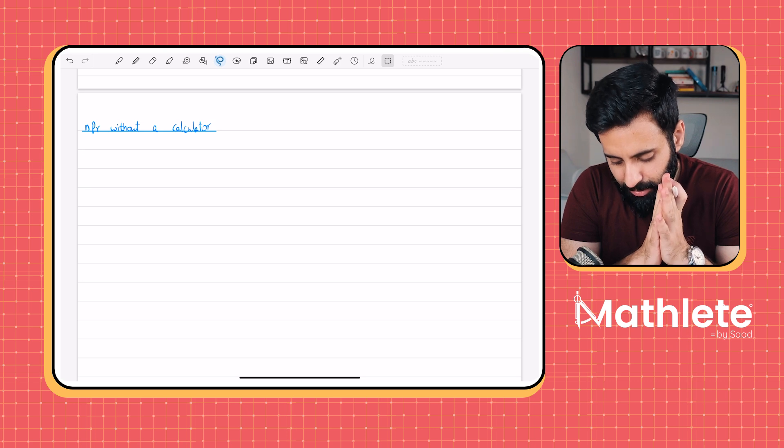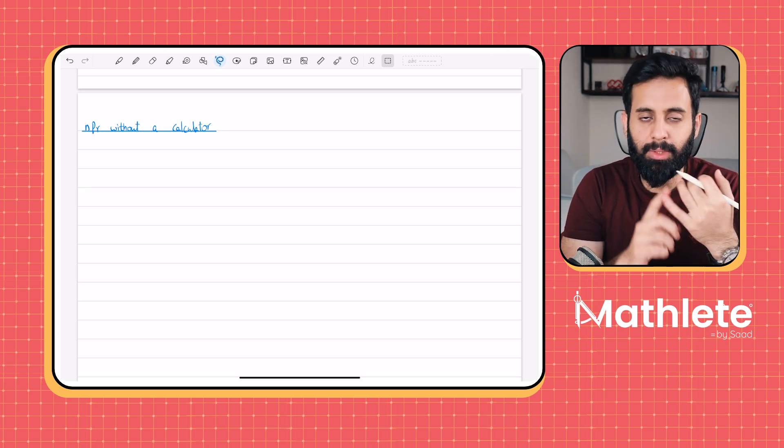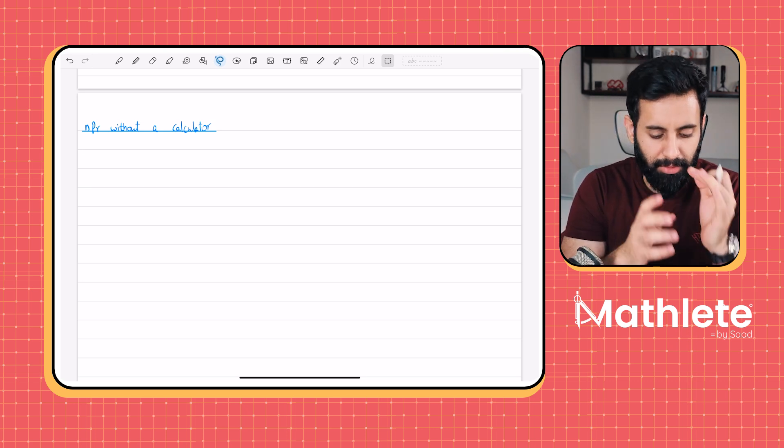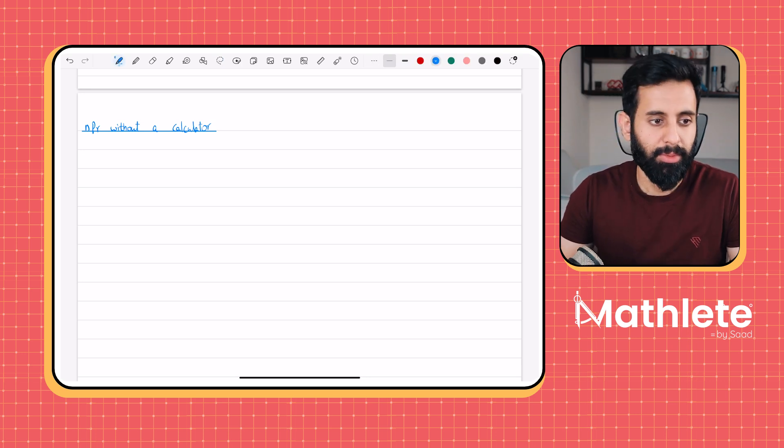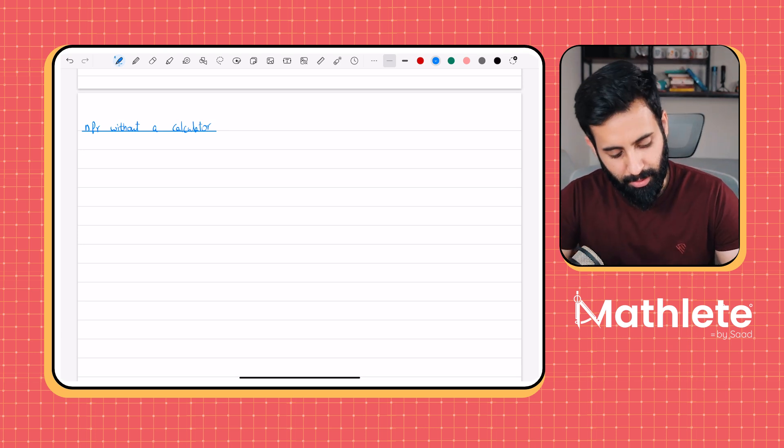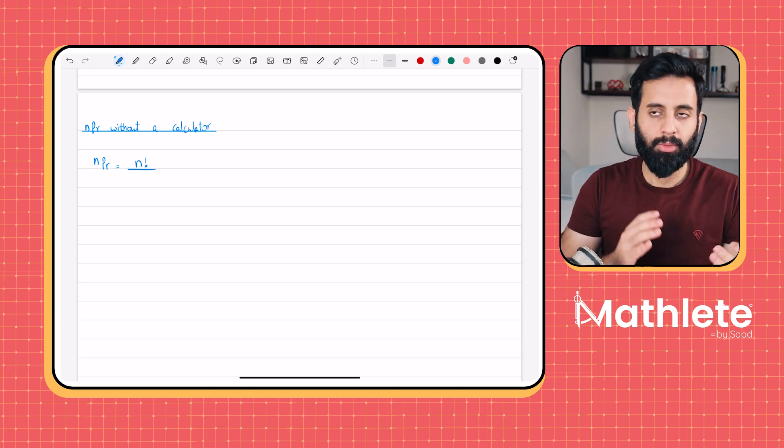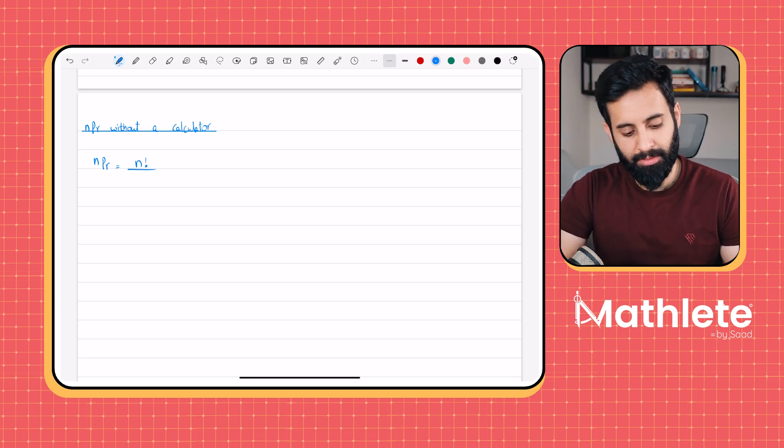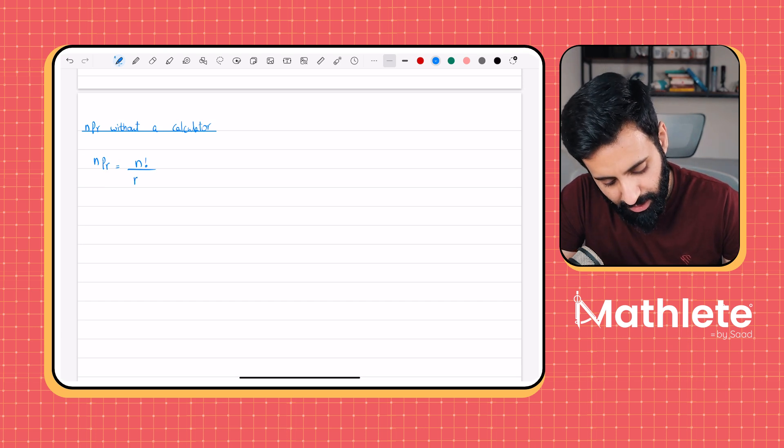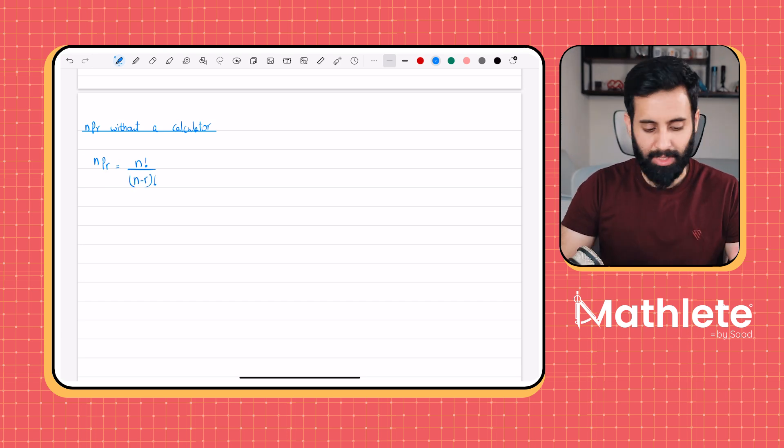So as we saw in NCR, there's a way to do it with the formula, there's a way to do it without the formula. So here also the same concept applies. We're first going to look at what the formula is, and then we'll see how we can do it with the formula and without the formula. So NPR, the formula is very similar to NCR. NCR was N factorial over N minus R factorial into R factorial, whereas NPR is simply N factorial over N minus R factorial. That's the formula.